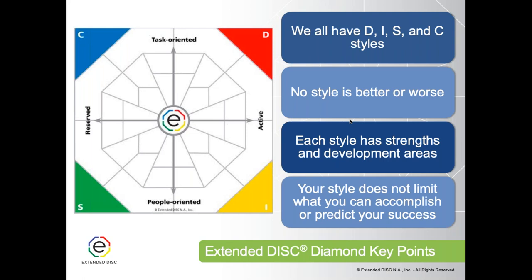A lot of our clients have used other DISC assessments before, and today's webinar will help clarify the difference between the Extended DISC diamond and other DISC models. The most obvious difference is that the quadrants D, I, S, and C are well represented, but the red diamond in the middle shows that we are a combination of all four styles. The diamond allows us to understand the complexities of our behavioral style.